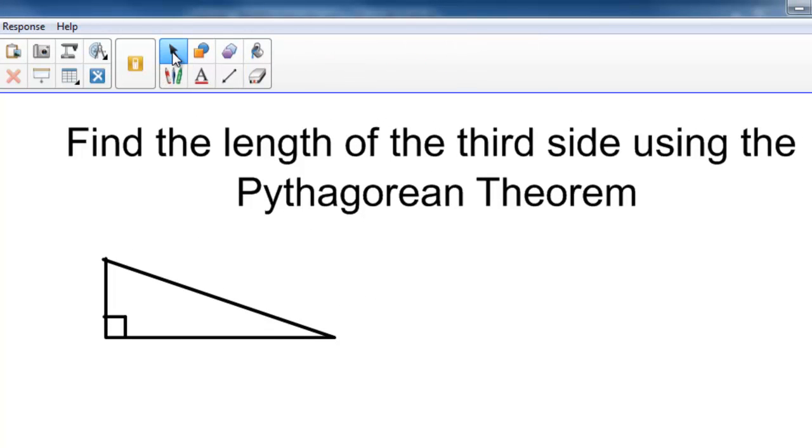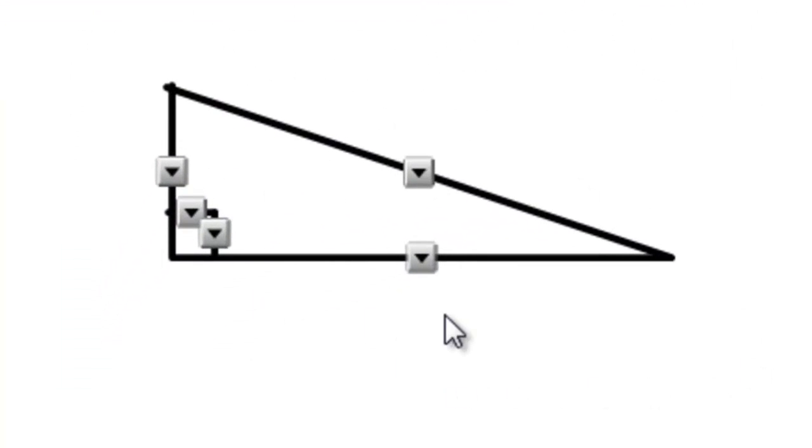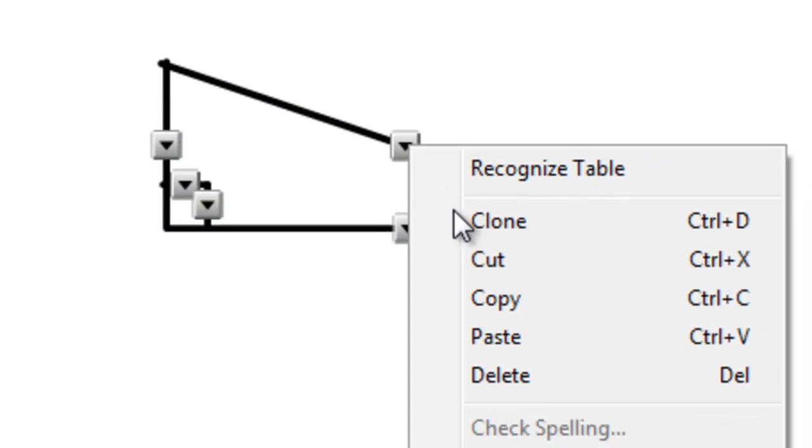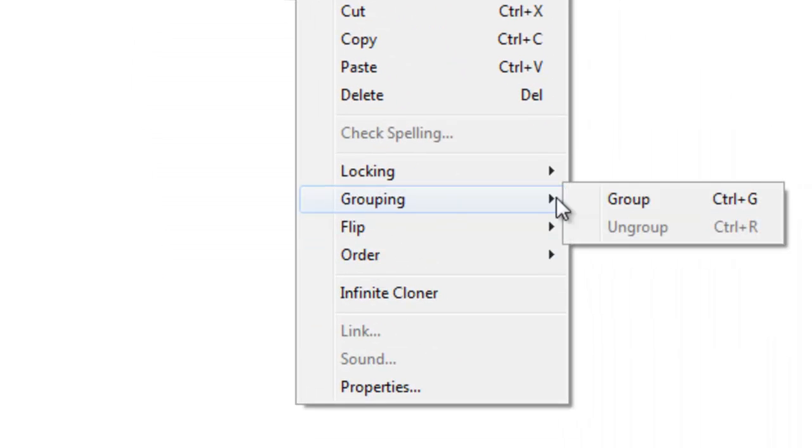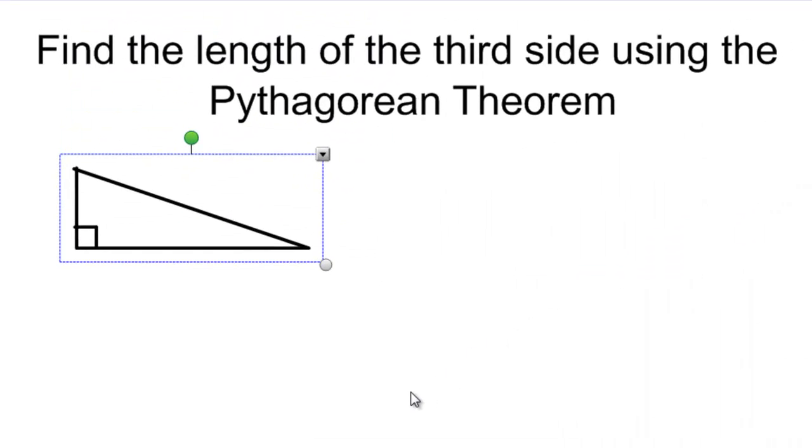I'm going to use the arrow tool. I'm going to draw a box around all of these and then pick any one of the drop downs and say group. Group them together. Now they'll behave as one.